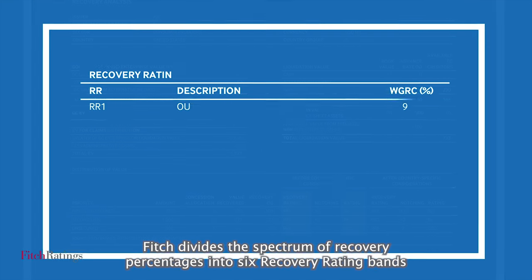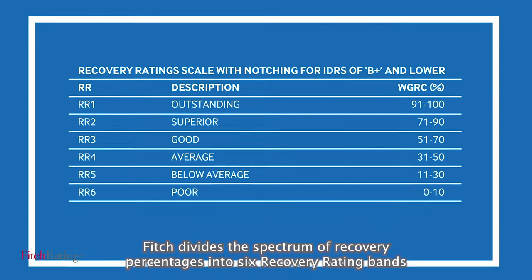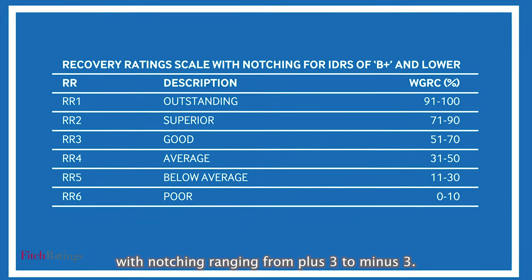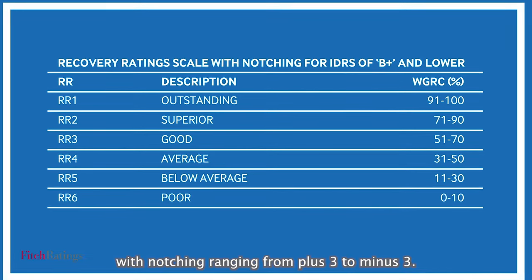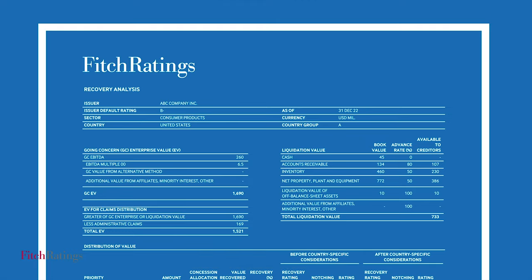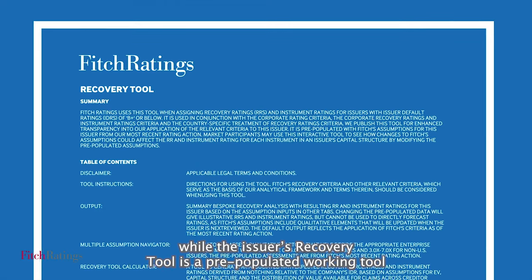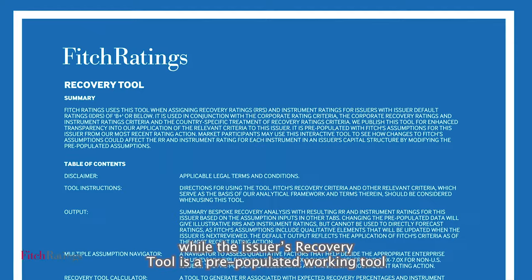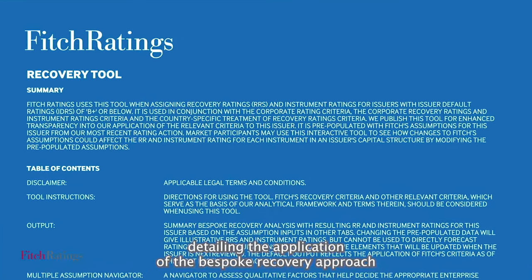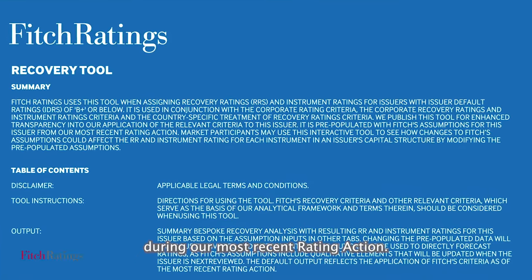Fitch divides the spectrum of recovery percentages into six recovery rating bands, with notching ranging from plus 3 to minus 3. The key assumptions and conclusions of the bespoke recovery analysis are described in the issuer's rating report, while the issuer's recovery tool is a pre-populated working tool detailing the application of the bespoke recovery approach during our most recent rating action.